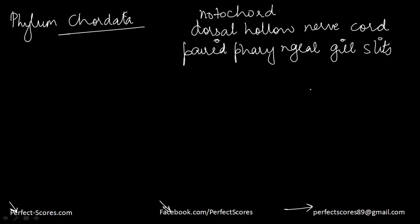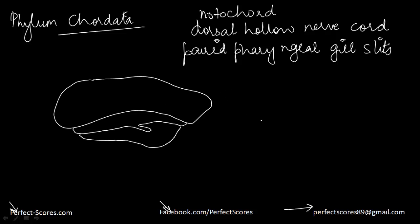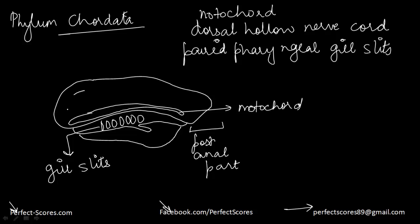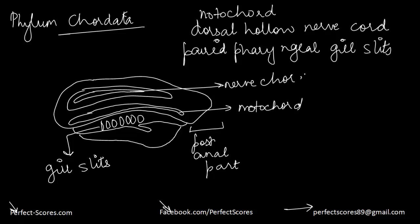Here is a rough diagram of how the animal should look like. The gill slits are present here. This part over here is the post-anal part. The notochord is present here — it extends throughout the length. Enclosed by a layer is the nerve cord. So the features are: gill slits, nerve cord, notochord, and post-anal part.